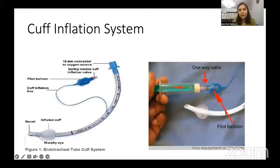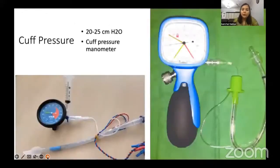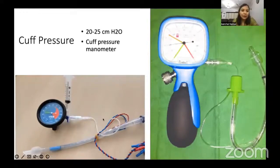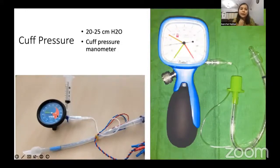A very commonly asked question is: what cuff pressure do you want to maintain? The answer is 20 to 25 centimeters of water. Cuff pressure manometers from various companies are used to measure it. One type has a three-way valve — the pilot balloon valve attaches to one end, a syringe to the other, and you inflate while watching the pressure gauge, stopping at 20 to 25 centimeters of water.